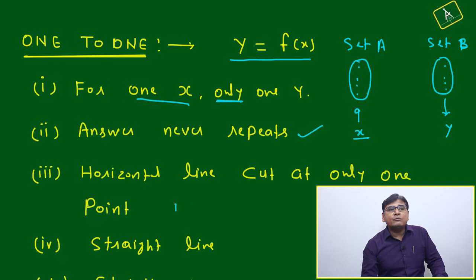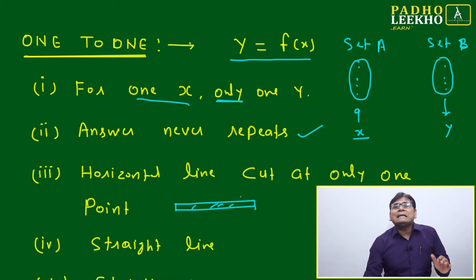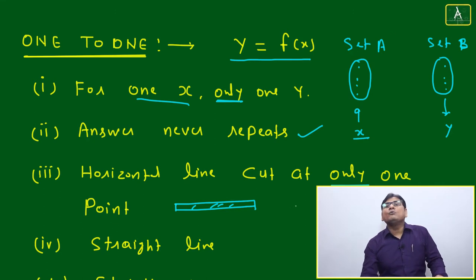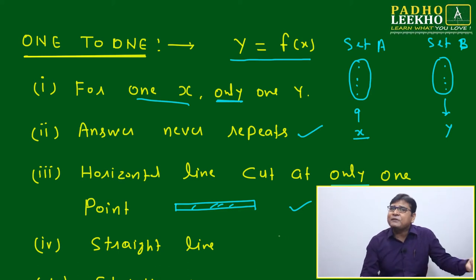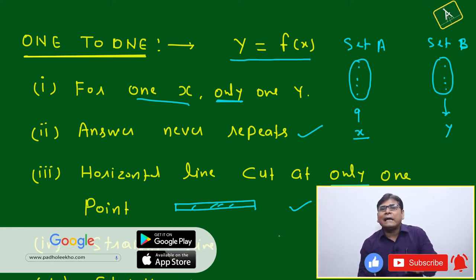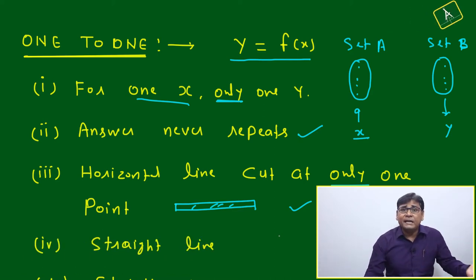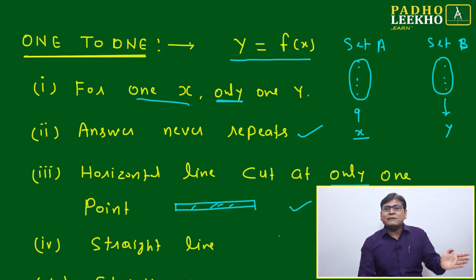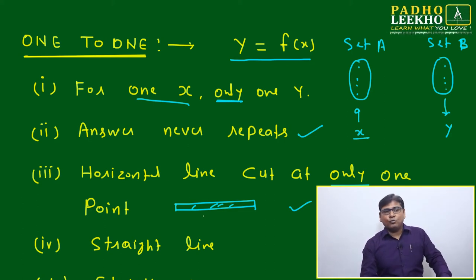The next test is the horizontal line test. You take one horizontal line and put it over the graph of the function. If it cuts at only one place or only one point, then we can say it is a one-to-one function. If it is cutting at more than one point, then it is not one-to-one — maybe it will be some different kind of function, or maybe it is not a function at all. If the horizontal line cuts at only one point, then we can say it is a one-to-one function.